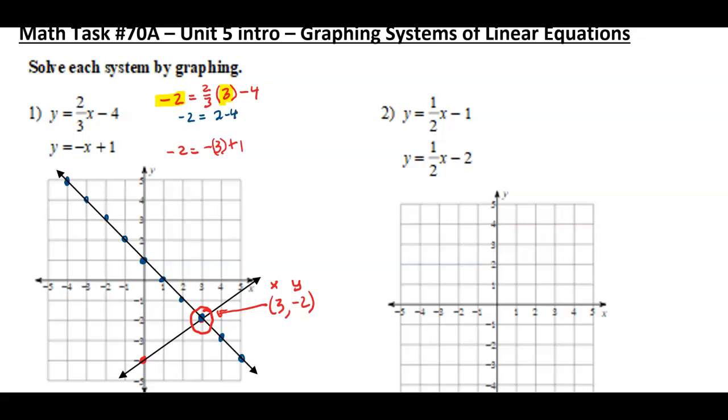If I do a little math here, negative 2 is equal to 2/3 times 3, that's 6 over 3, that's 2. 2 minus 4, negative 2 equals negative 2. That's a true statement. That's how I know it's a solution.